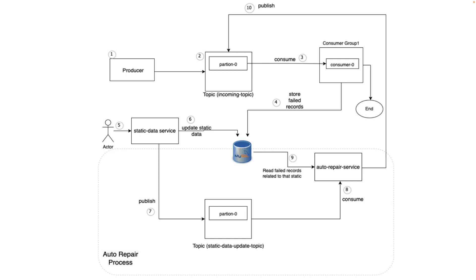Let's zoom into our auto repair processing a bit to see how we are planning to achieve it. The same flow from points one to four applies — the message ended up in the database in a failed state. Now this particular static data admin, as an actor, is updating the data.